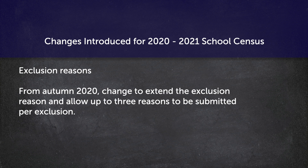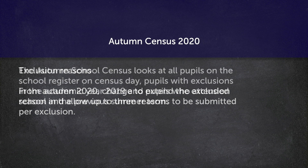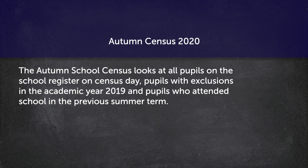Regarding exclusion reasons: from autumn 2020 you may add up to three reasons per exclusion. The autumn school census looks at all pupils on the school register on census day, pupils with exclusions in the academic year 2019, and pupils who attended school in the previous summer term.